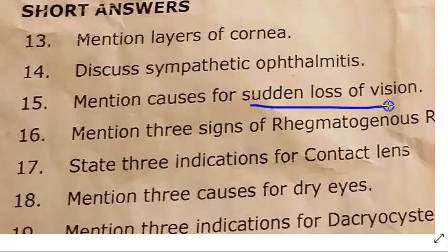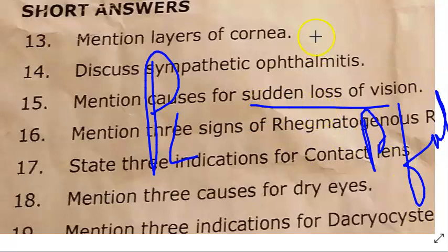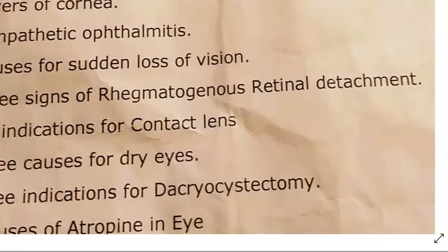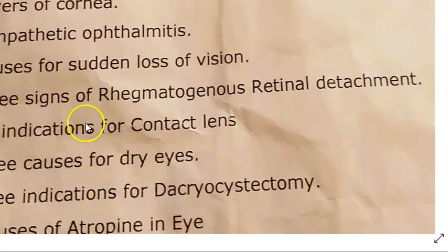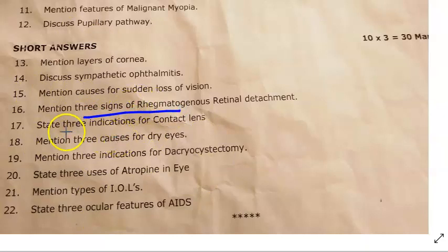Sudden loss of vision — painless causes: CRVO, ischemic optic neuropathy, and vitreous hemorrhage. Painful causes: acute iridocyclitis and chemical burns. Three signs of rhegmatogenous retinal detachment: the patient will have a tear, a hole (horseshoe), or lattice degeneration, and sudden loss of vision.